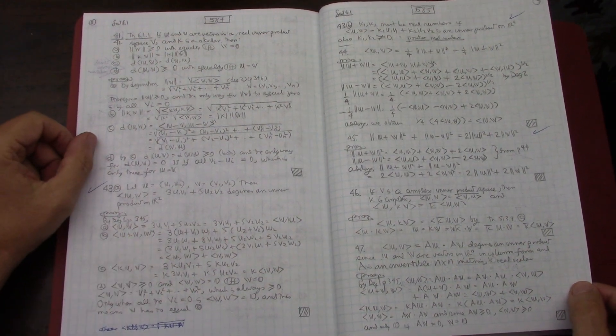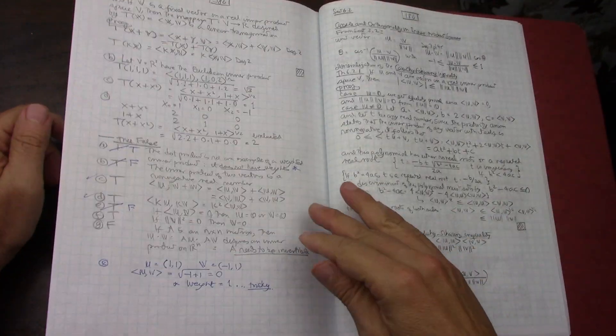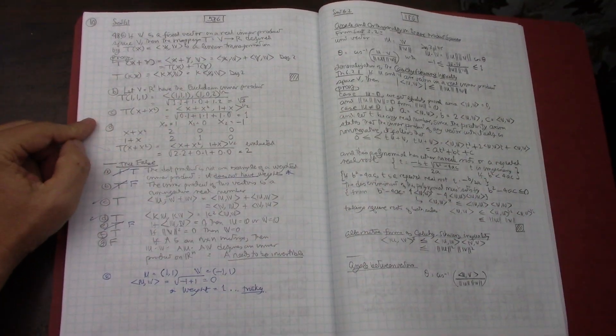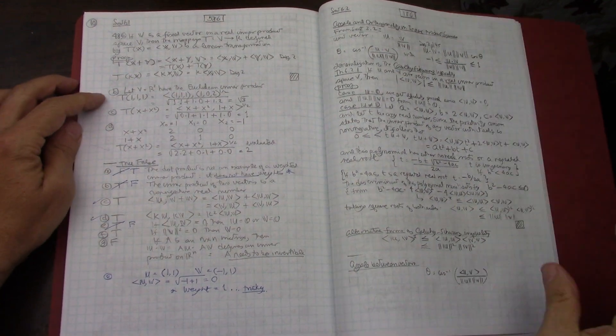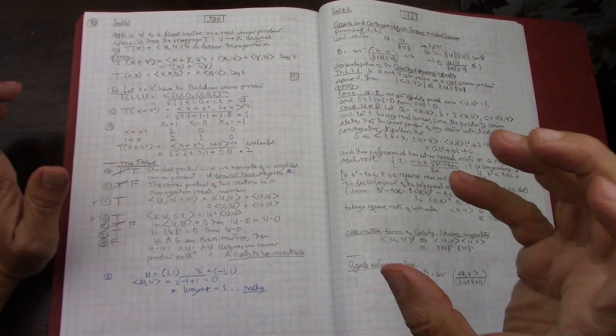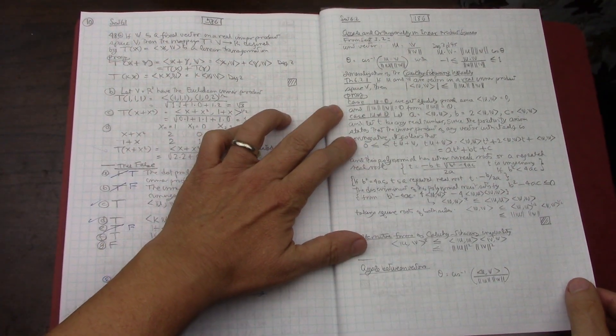Then getting down to proofs—at least the ones that were answered in the exercise book I got all right. True and false—sometimes they get me, that's just the way it is. Then on to section 6.2.